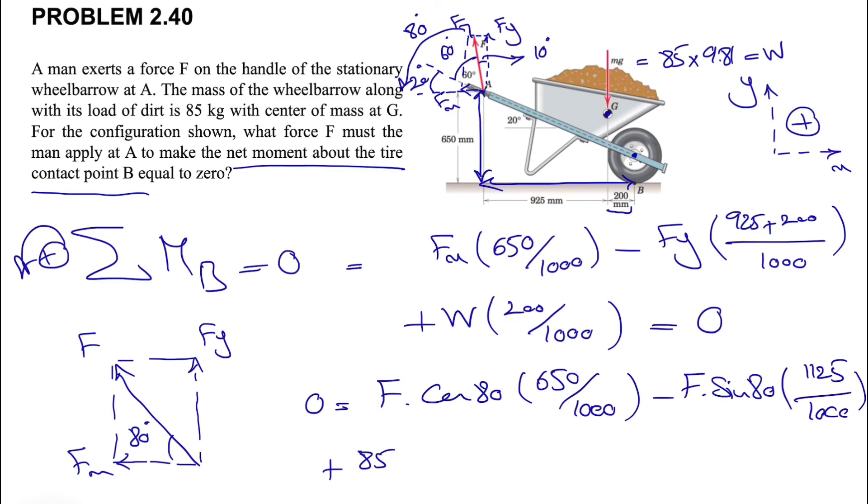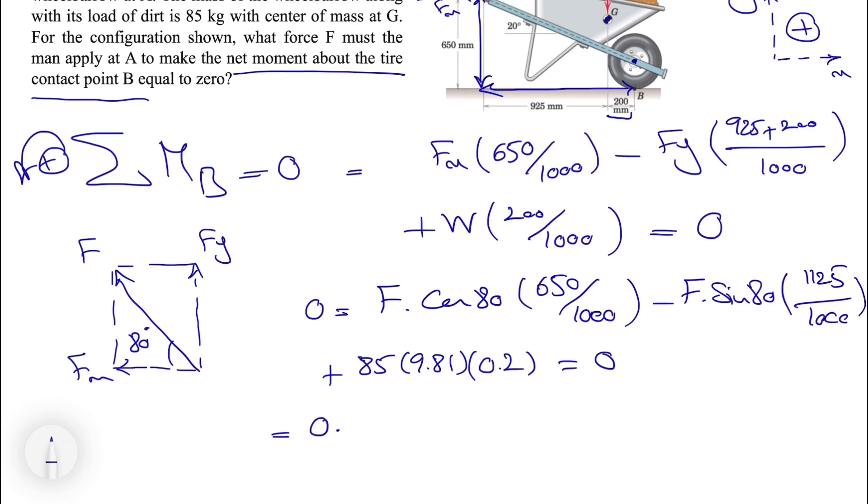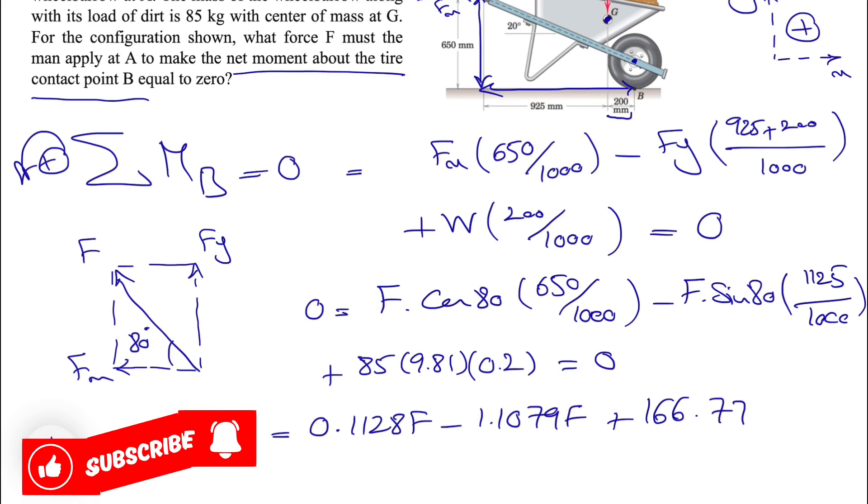And our last one, we have 85 times 9.81 times the distance, which is 0.2, equals zero. If we do that, we'll get the first part.